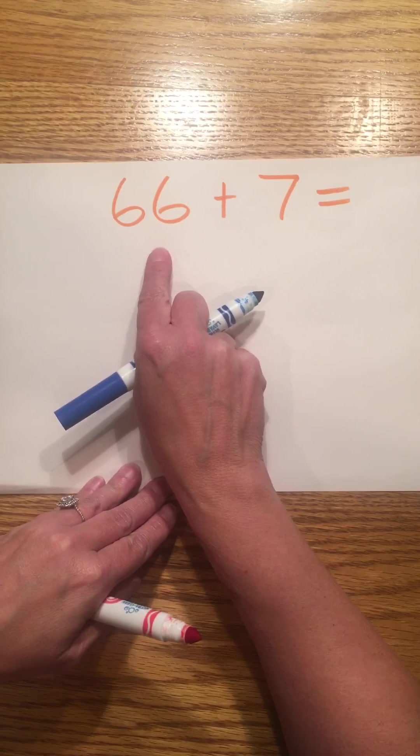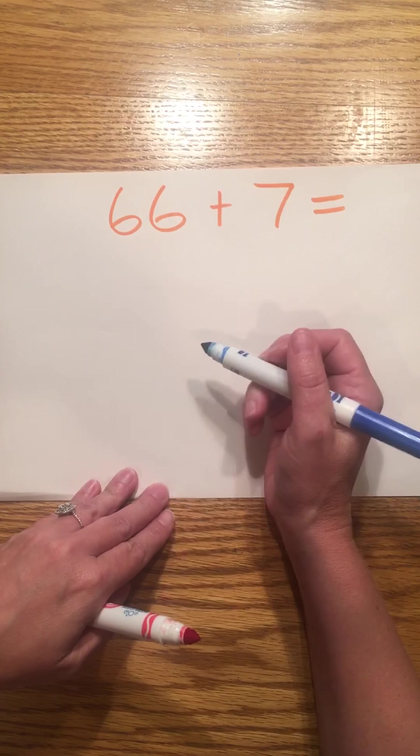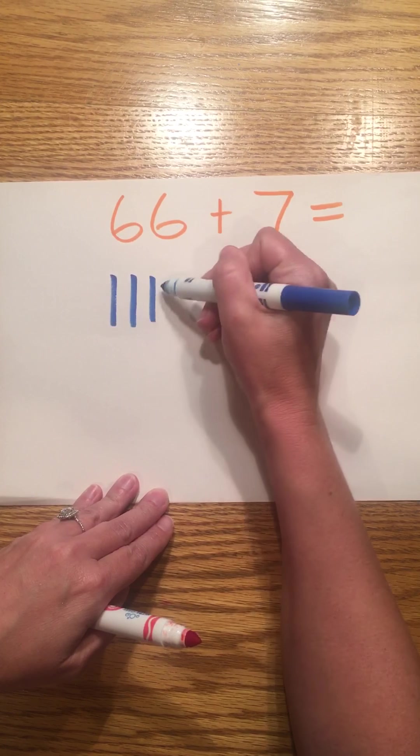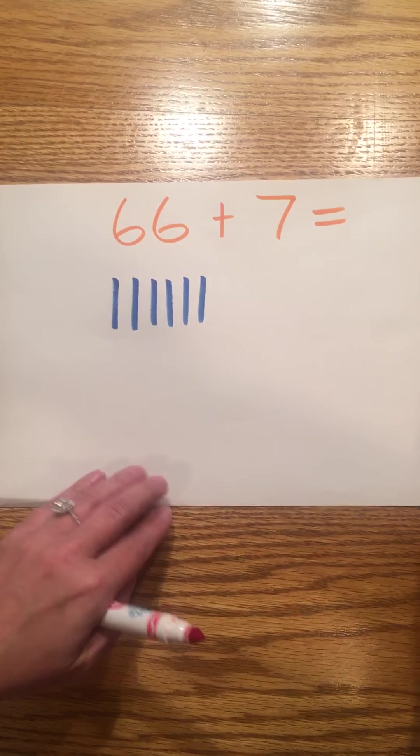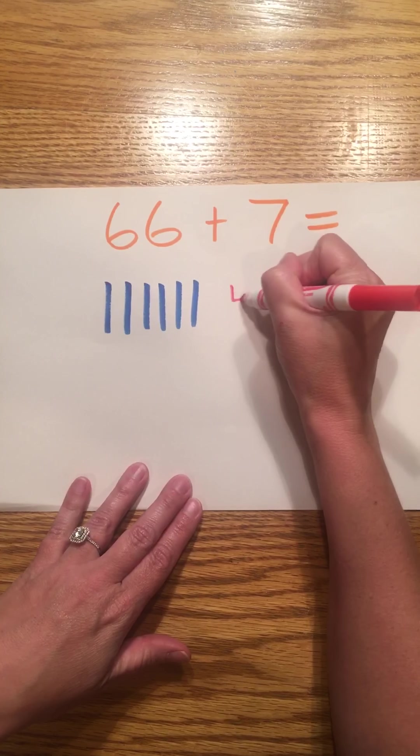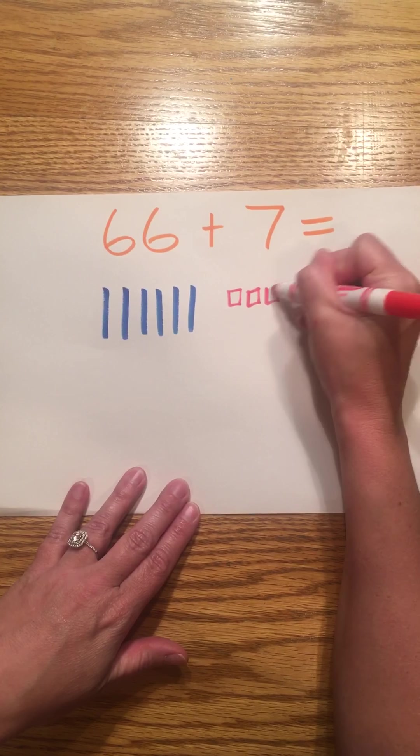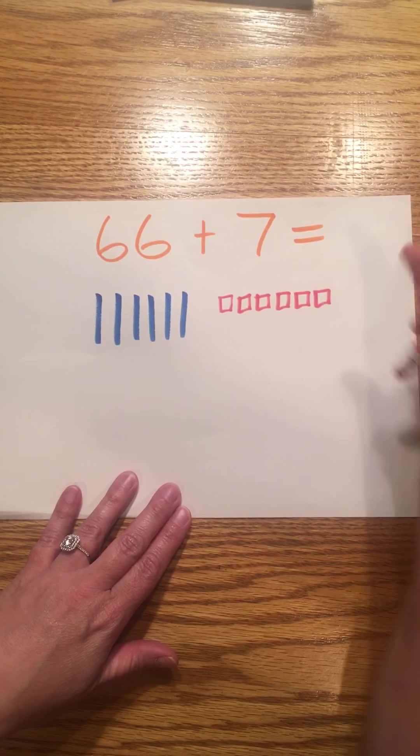In this number 66, 66 has six tens. One, two, three, four, five, six. It has six ones. One, two, three, four, five, six.